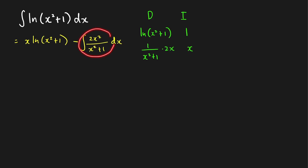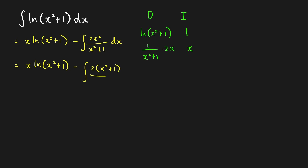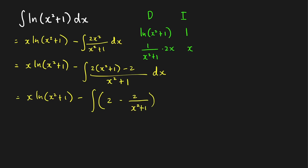To evaluate the remaining integral, we do an algebraic manipulation: write the numerator 2x² as 2 times (x² + 1) minus 2. This splits the integral into the integral of 2 minus 2 over (x² + 1) dx. So the full answer is x·ln(x² + 1) minus 2x plus 2·arctan(x) plus C.